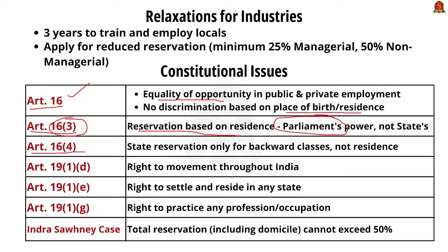Article 16(4) says the state has power to make reservation only if people are not adequately represented or in favor of backward classes. The term 'reservation based on residence' is not included in the state's powers for reservation laws. Article 35 clearly states that only Parliament has the power to enact laws regarding residential requirements in employment.